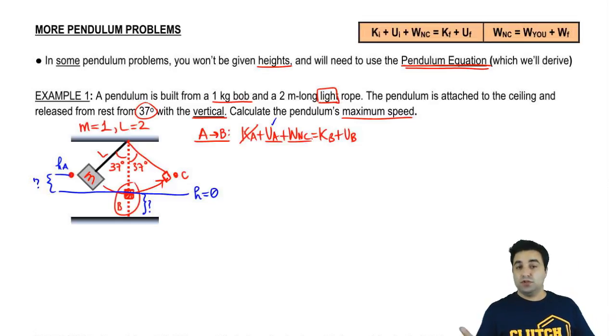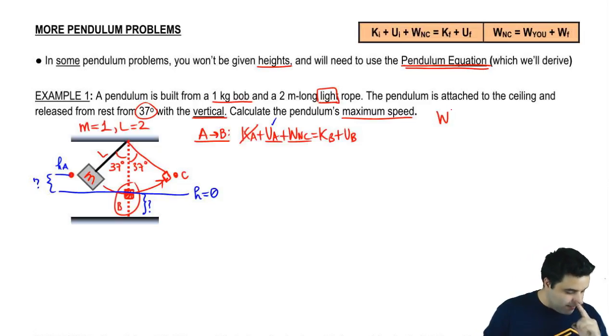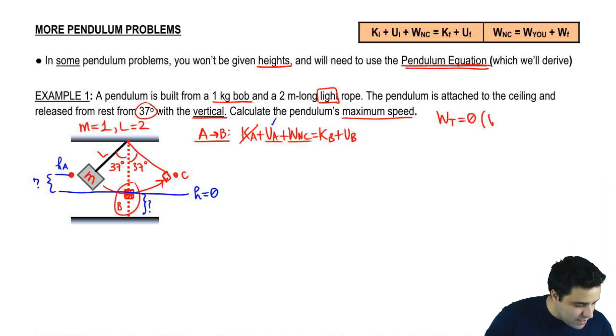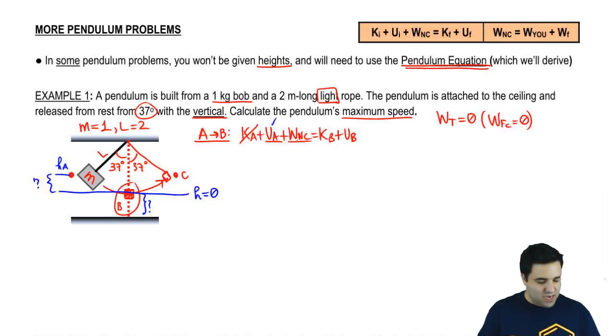Work non-conservative is the work done by you, you're just watching, or the work done by any kind of external force plus the work done by friction. There is no friction. Now just to be clear, there is tension pulling on this thing but the work done by tension is zero because tension is a centripetal force here. It's pulling towards the center and the work done by centripetal forces is always zero. And Mg is not non-conservative so Mg doesn't go there. This is zero because there's no work done by you or friction.